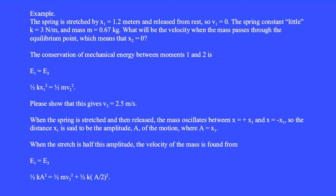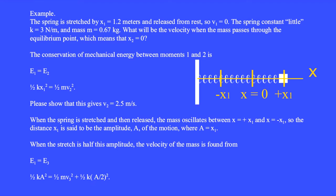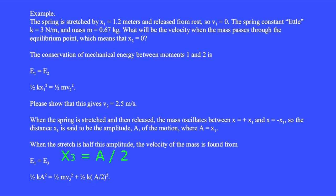When the spring is stretched and then released, the mass oscillates between X equals +X1 and X equals −X1, so the distance X1 is said to be the amplitude A of the motion, where A equals X1. When the stretch is half this amplitude, the velocity of the mass is found from E1 equals E3: ½KA² equals ½MV3² plus ½K(A/2)².